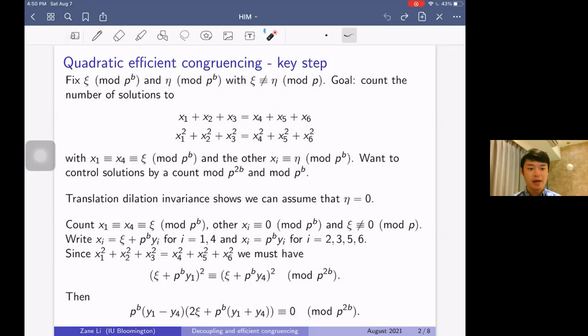You have to do some other things, a bilinearization - those are somewhat more standard. This is the key step. Translation dilation invariance shows that we can assume that η equals zero. So now we just want to count solutions where x_1 and x_4 are congruent to ζ mod p^b, the others are congruent to 0 mod p^b, and ζ is not zero mod p. We can write x_i as ζ + p^b·y_i for i = 1, 4.